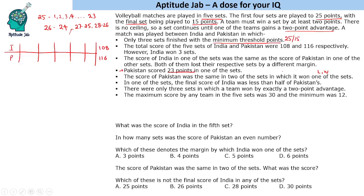The score of Pakistan was the same in two of the sets — one lost and one won, so in both sets it had equal scores. In one of the sets, the final score of India was less than half of Pakistan's — an extreme case of losing badly.